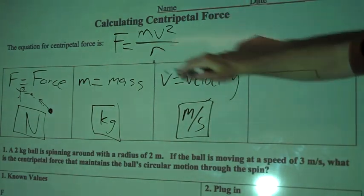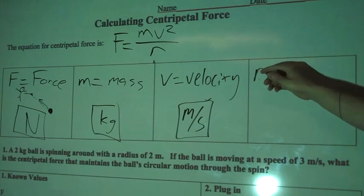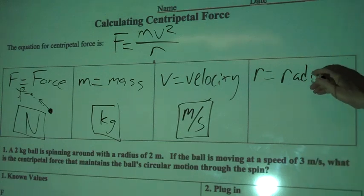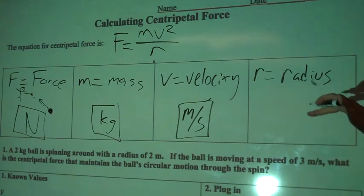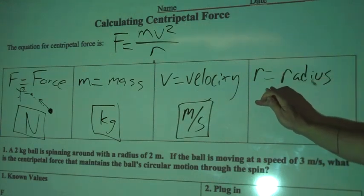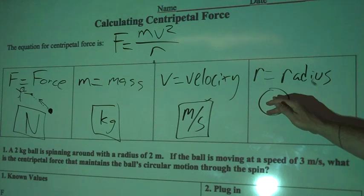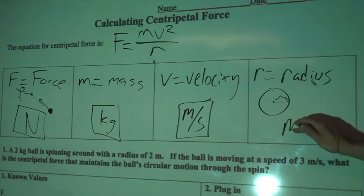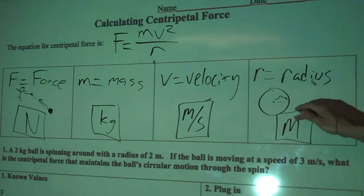And then the last variable we have here is r, and r is the radius. R-A-D-I-U-S. And the radius is actually the distance, so I'll show you on a circle here. I'm going to draw a little circle. The radius is the distance from the center of a circle out to the end. So this right here is the radius, this area in here. And radius is going to be measured most commonly, we're going to see it in meters.